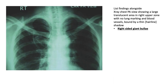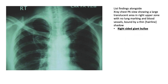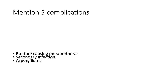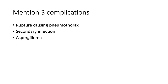This is an example of a bulla — a large translucent area in the right upper zone with no lung markings and blood vessels, bounded by a thin hairline shadow. This is a right-sided giant bulla; possibilities include an apical pneumothorax with a collapsed lung margin or a large cavity. Three complications of a bulla: it can rupture causing a pneumothorax, it can become secondarily infected, or you can have a fungal involvement called aspergilloma.